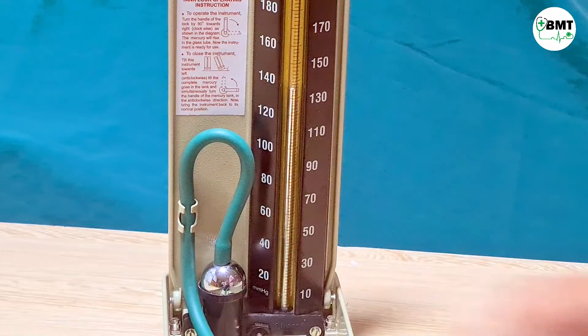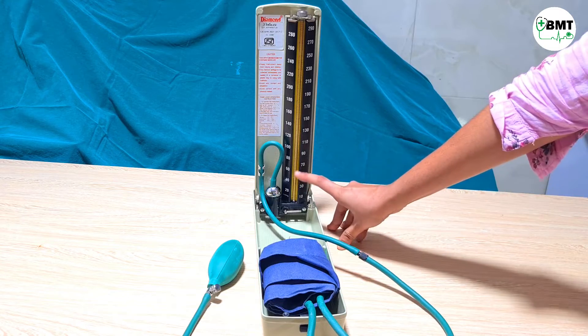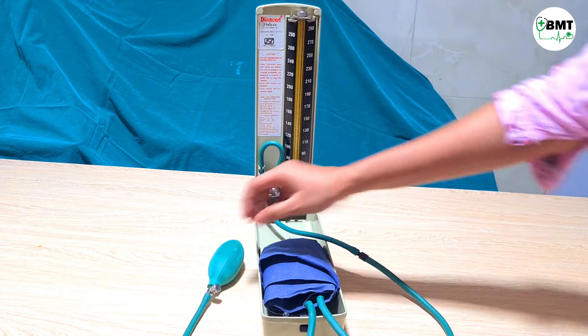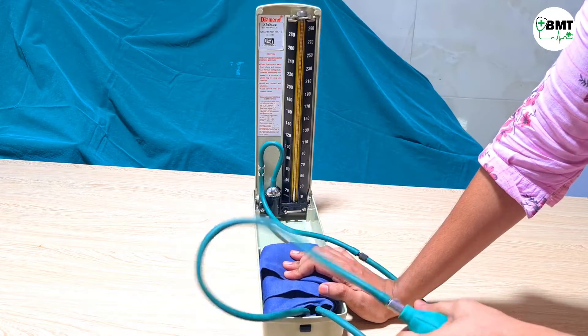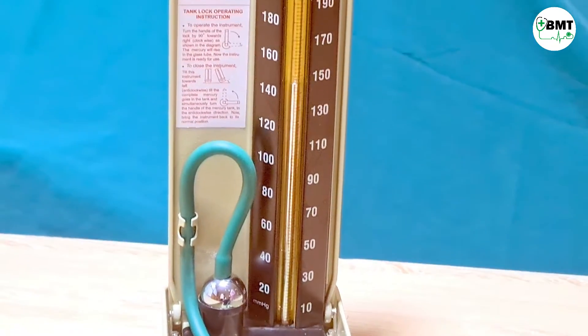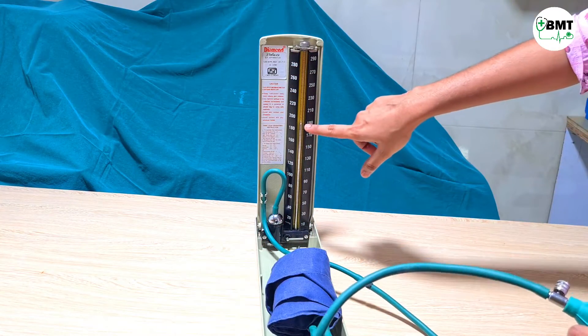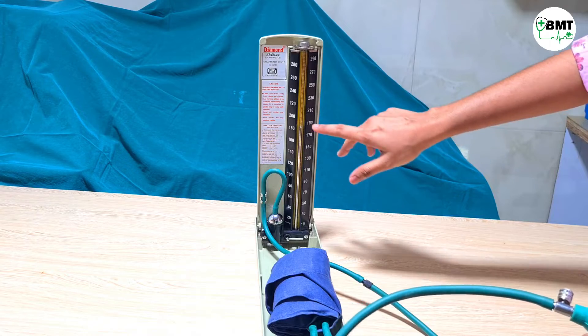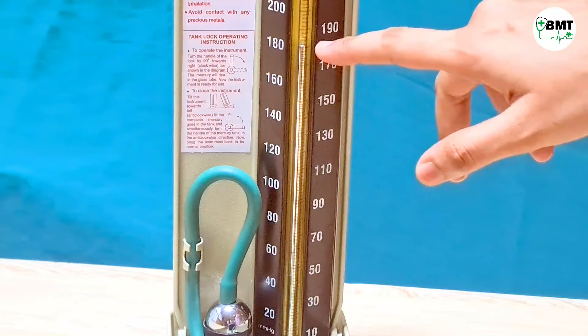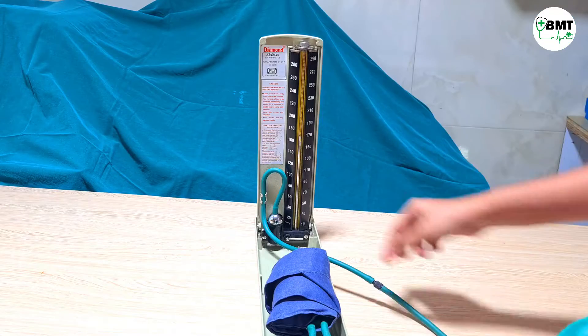Now let us see if problem comes that mercury is not being stable in one place. For example, I am inflating this. Now as you can see, mercury is coming down, but this is tolerable leakage. If it falls more speedily, then there is major leakage over here.